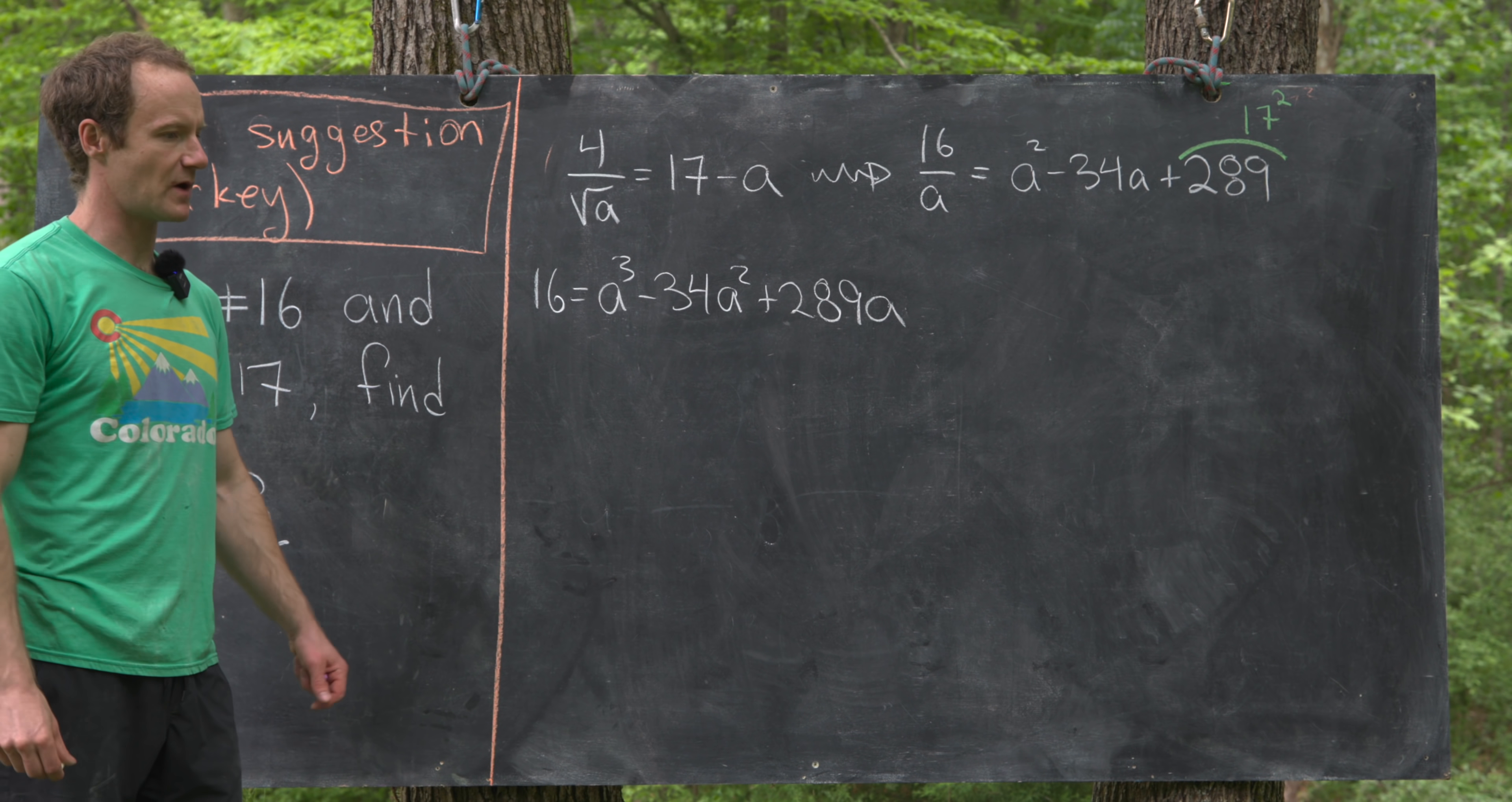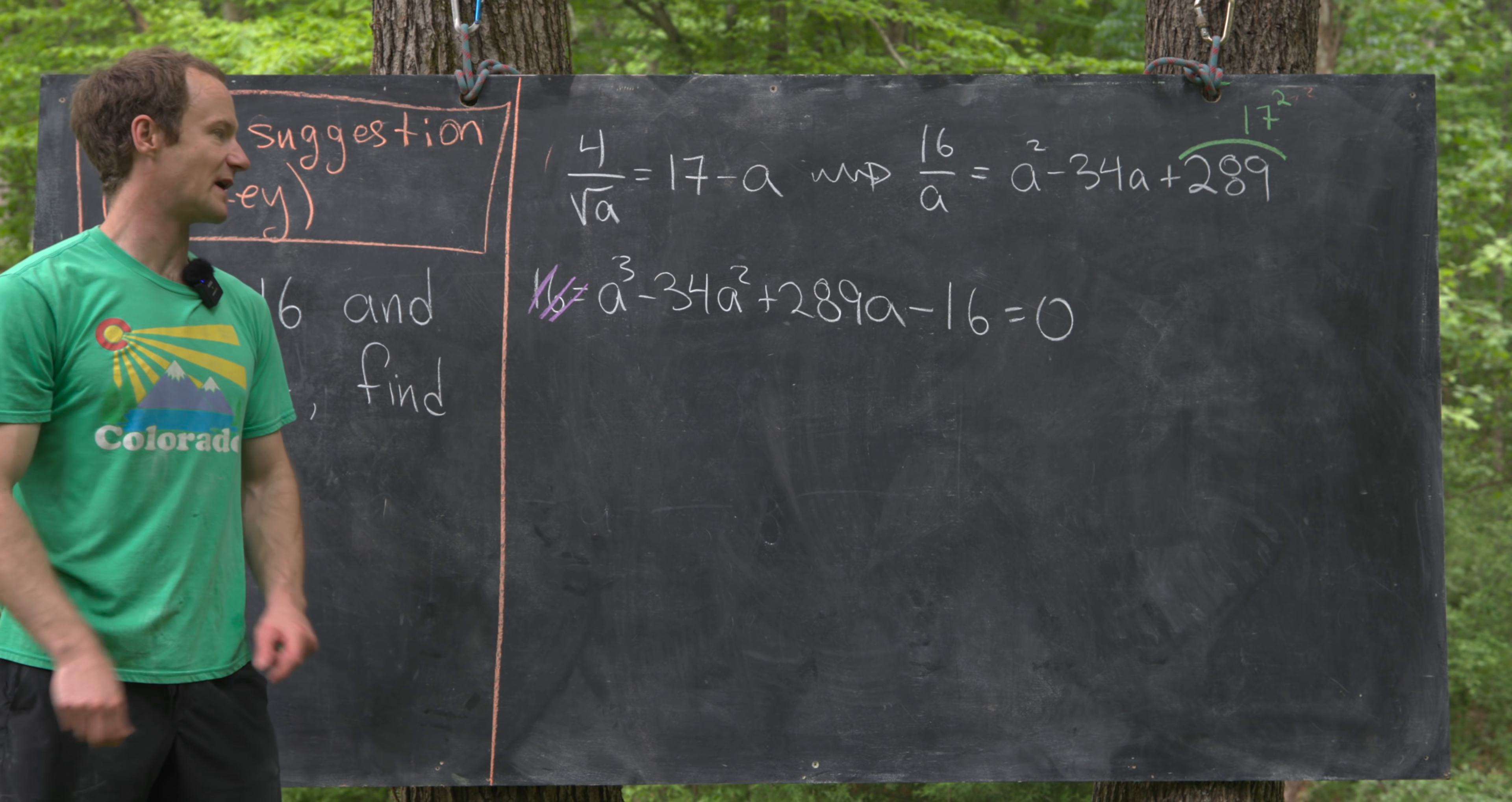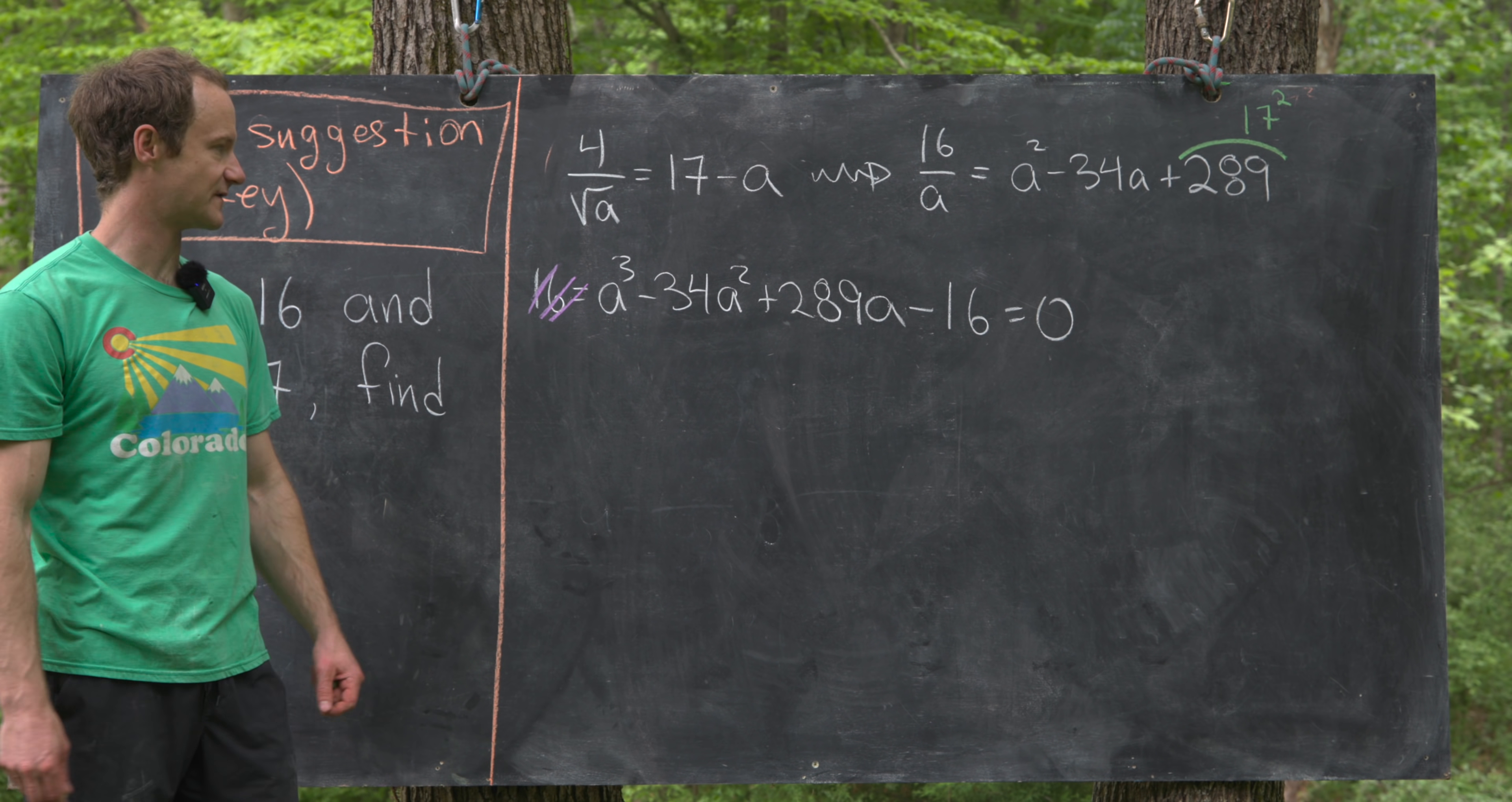So that's going to give us 16 equals a cubed minus 34a squared plus 289a. But usually when we're talking about polynomials, we want to find their roots. So what we could do is subtract 16 from both sides, and that'll give us this cubic polynomial equals 0: a cubed minus 34a squared plus 289a minus 16 equals 0. Okay, but there's actually some hints built into this problem, quite a few hints in fact.